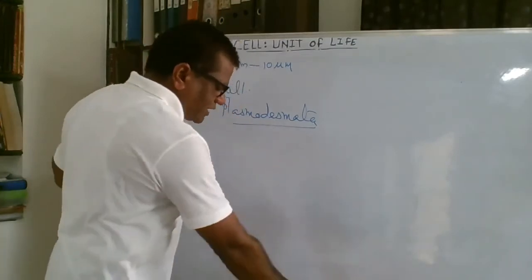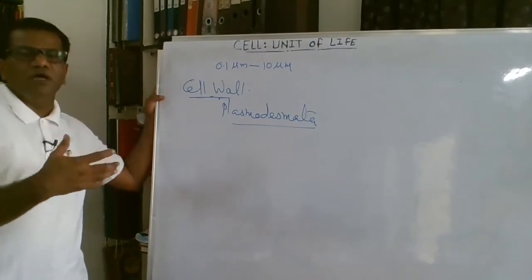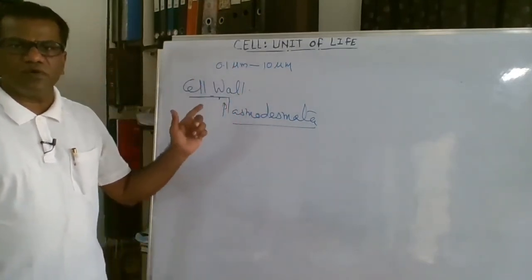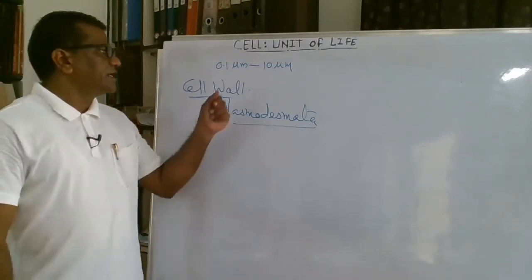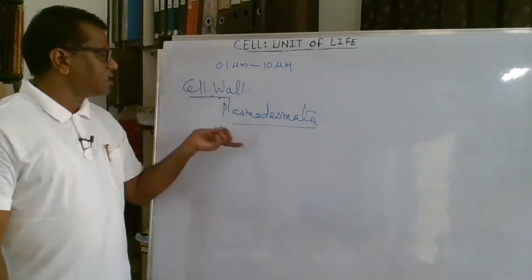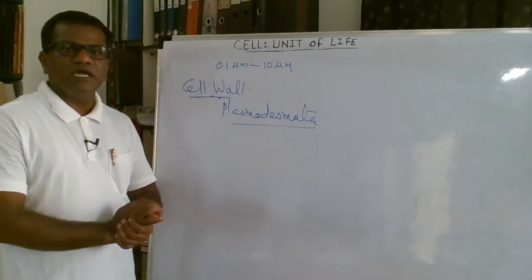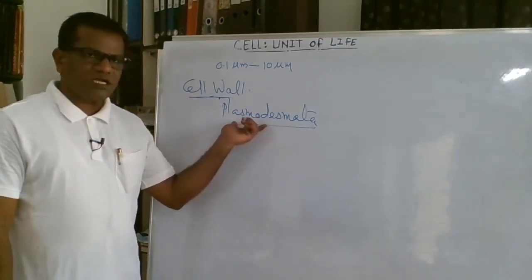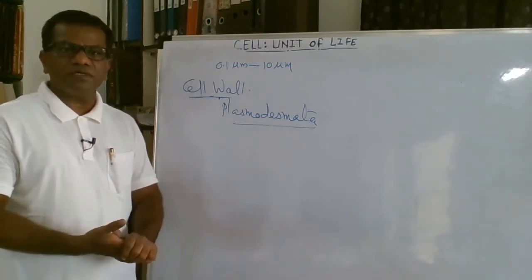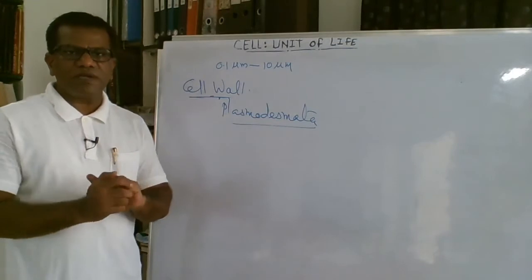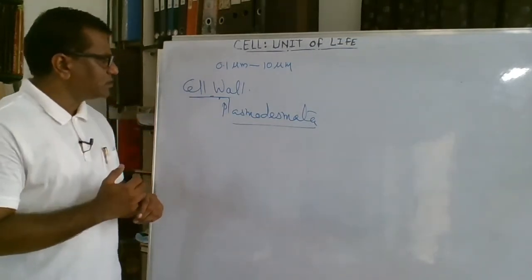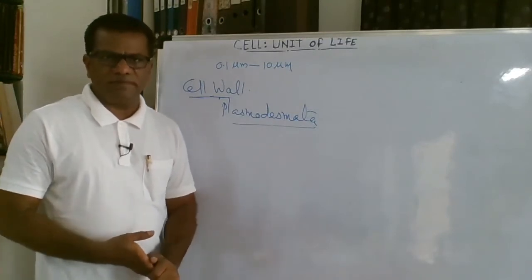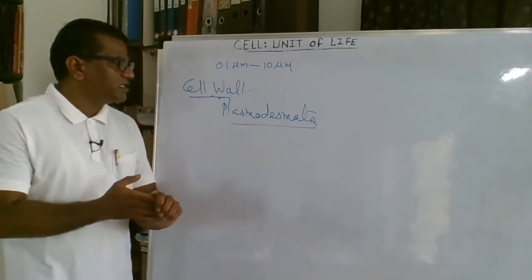So, the cell wall is made up of a primary wall layer and a secondary wall layer, together 0.1 to 10 microns. The primary wall layer is permeable and made up of hemicellulose and cellulose, 0.1 to 3 microns. The secondary wall layer becomes tough and impermeable due to lignification. When it becomes impermeable, materials are transported through the plasmodesmata, which traverse through the plasma membrane, middle lamella, and cell wall, carrying material from one cell to another.